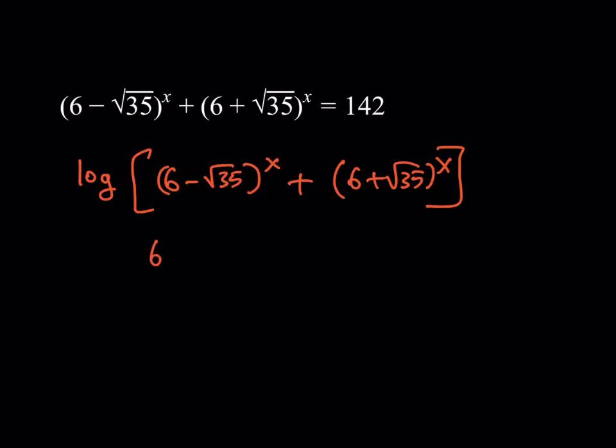If you had a single exponential expression equal to 142, you could log both sides — that would bring the x down and it would work. But in this case, unfortunately, it doesn't. So we have to use a different approach.